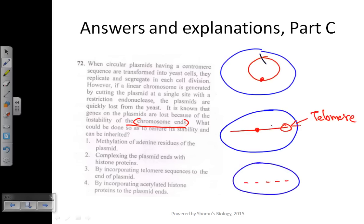If we add telomere sequences at both ends of the chromosome, which is common in eukaryotic cells, then even if exonucleases try to degrade it, they will not cleave the actual structural or functional genes. Let's look at the options. The first option is methylation of adenine residues of the plasmid.